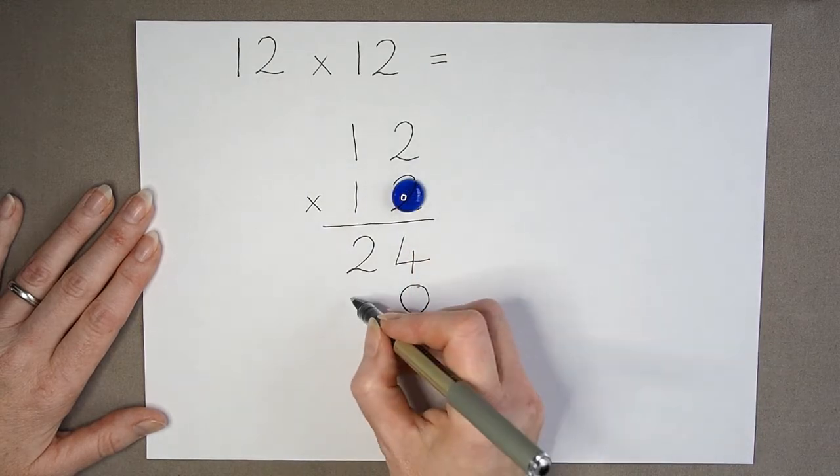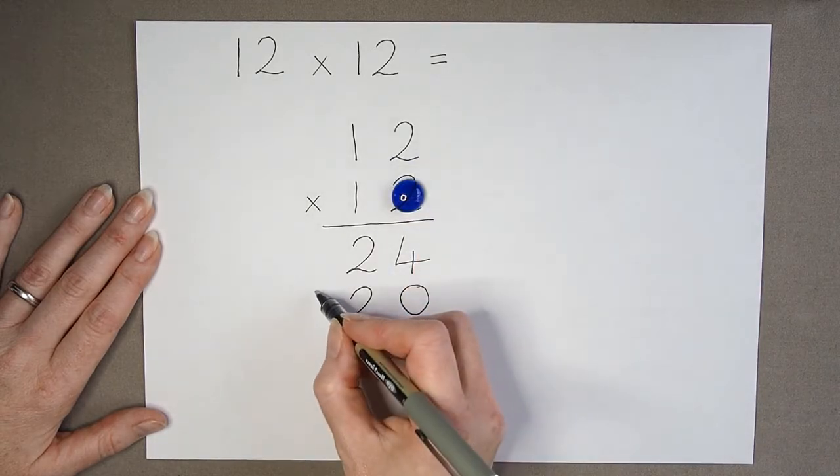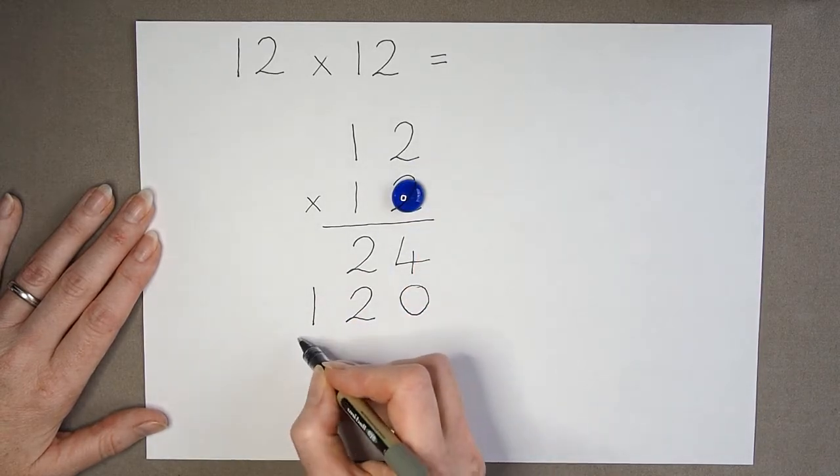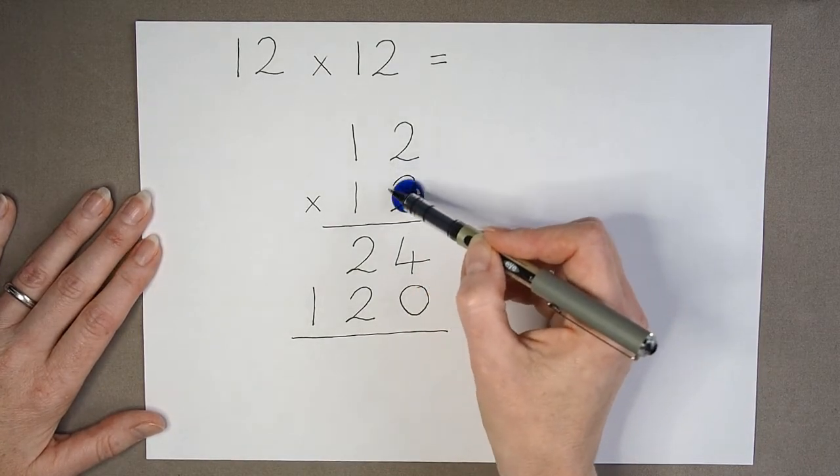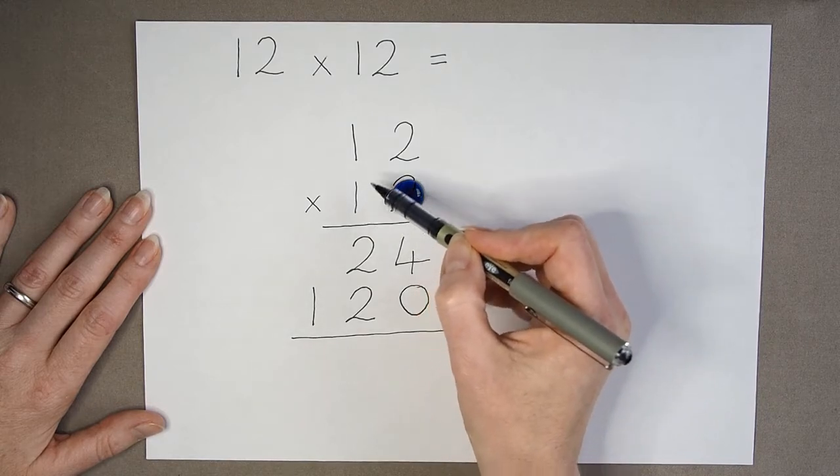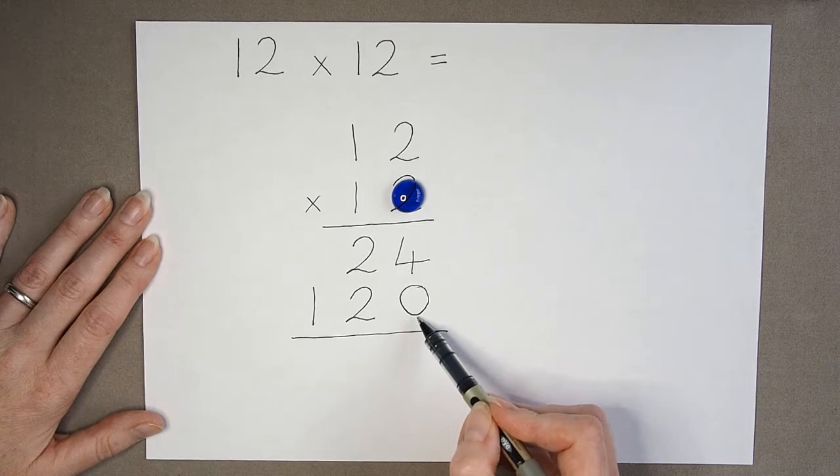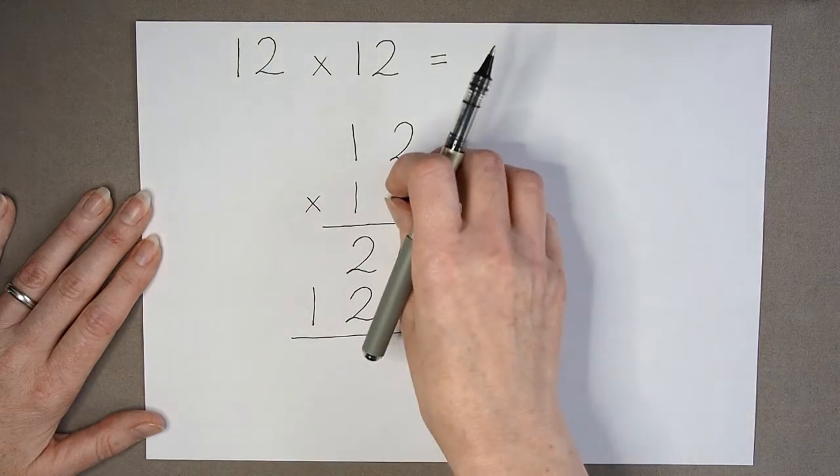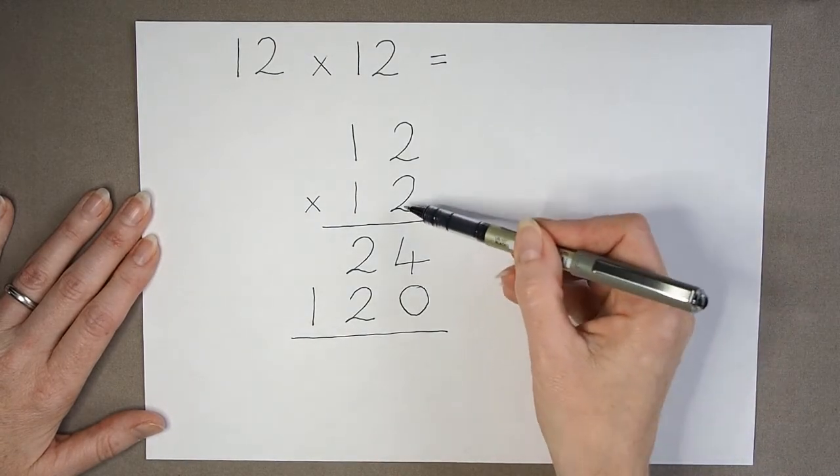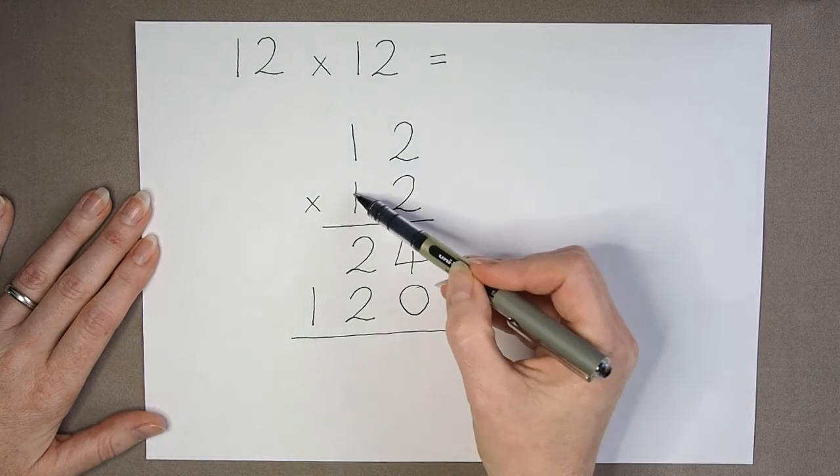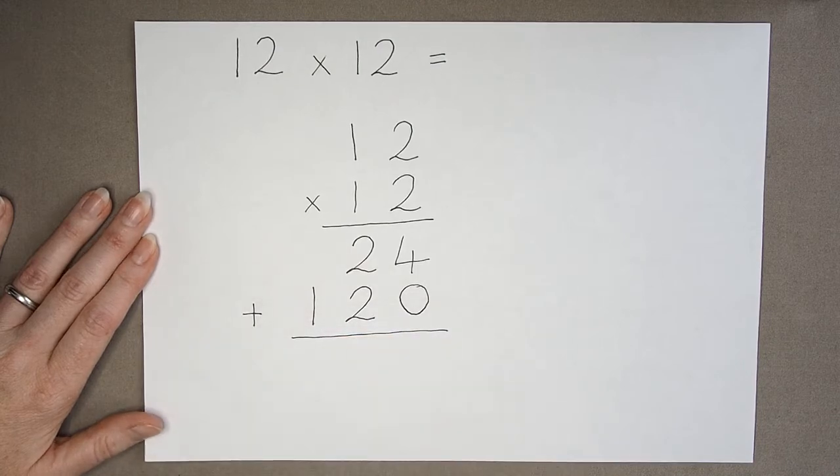Now I can multiply by the tens digit. 1 multiplied by 2 is 2, and 1 multiplied by 1 is 1. And we can see that effectively what we did here is 10 multiplied by 12, and we can see that was 120. So now I've got two answers: the answer from multiplying the units and the answer from multiplying the tens. And all I need to do is add them together.